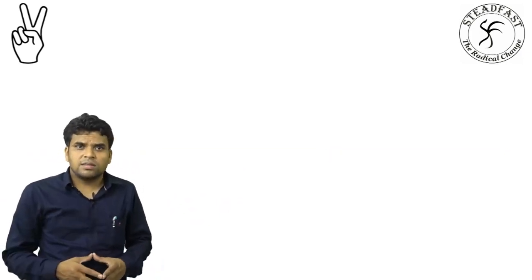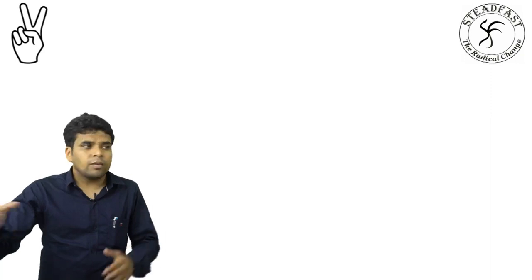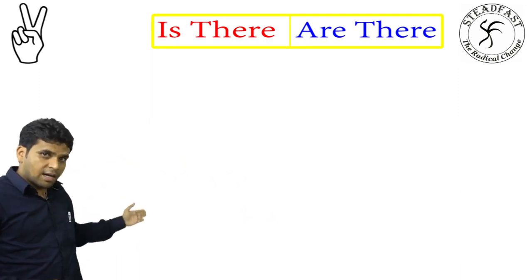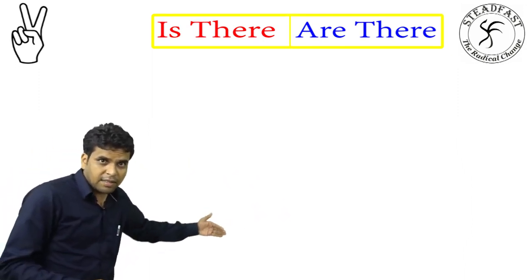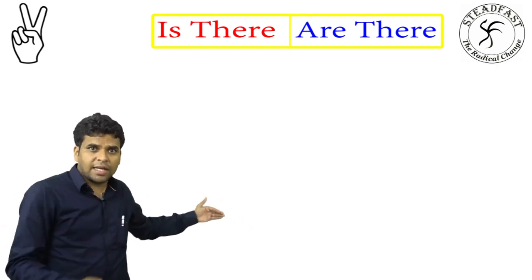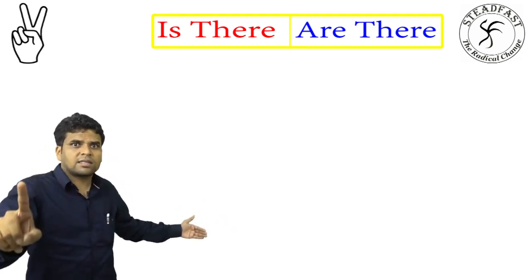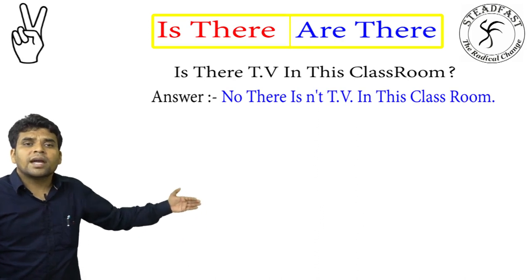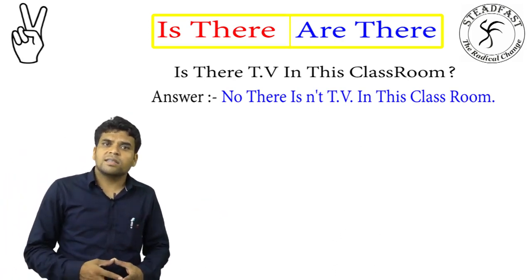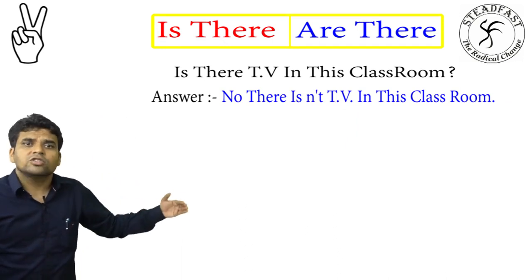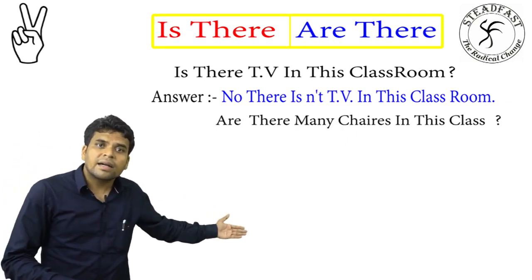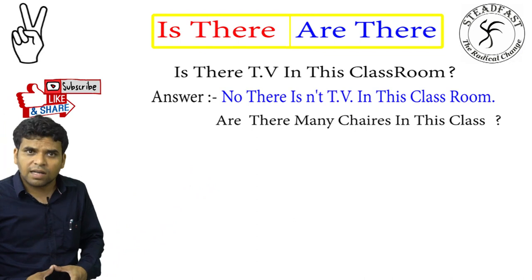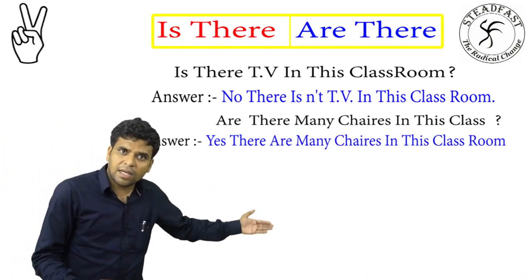Now we talk about questions — when we ask questions, we use 'is there' or 'are there'. For example: is there a TV in this classroom? No, there isn't a TV in this classroom.